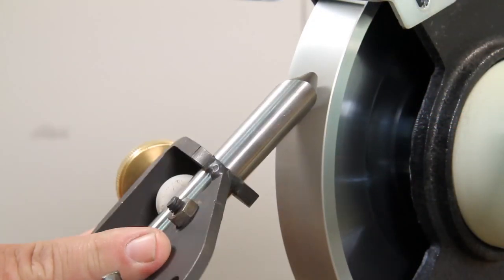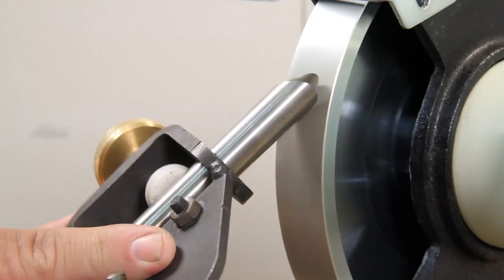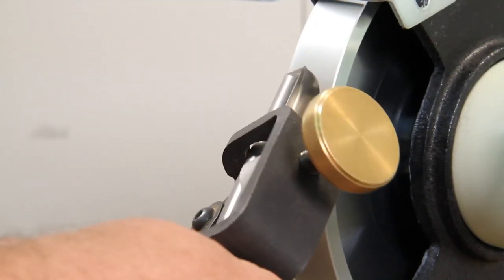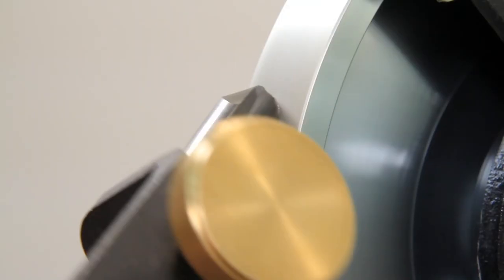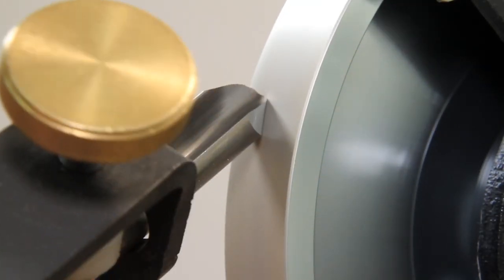Using light pressure, sharpen the tool using a smooth side-to-side motion, making sure not to pause along the way. This ensures a smooth transition along the cutting edge.